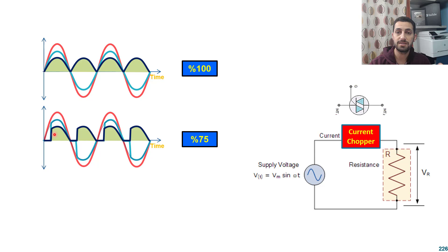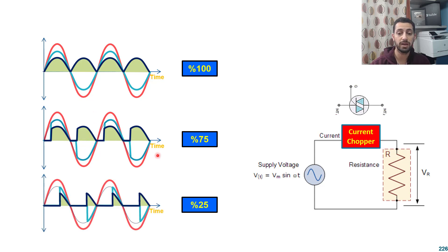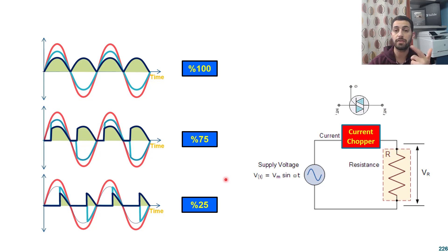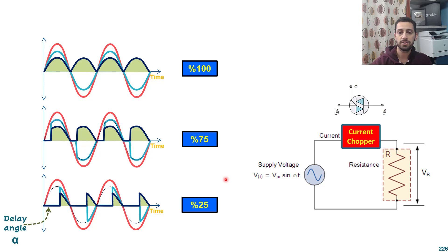The controllability with the triac is over the full 100%: I can deliver 100%, or less, or less. The thyristor can only deliver 50% or less, because it cancels the negative cycle. This is the delay angle alpha and that is the conduction angle beta.